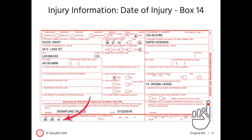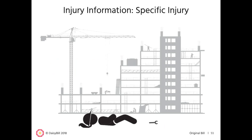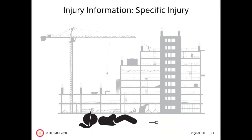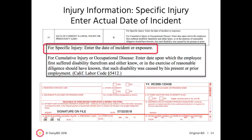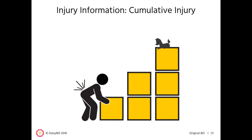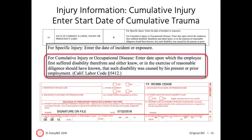The DWC expects the date of injury in box 14. There are two types of injury: a specific injury and a cumulative injury. A specific injury occurs as the result of a single incident or exposure — for example, when a worker falls and injures their back. For a specific injury, enter the actual date the injury occurred. A cumulative injury results from repetitive trauma, mental or physical, over a period of time — for example, a worker who regularly lifts heavy objects and develops progressive lower back pain. For a cumulative injury, enter the start date of the cumulative trauma.